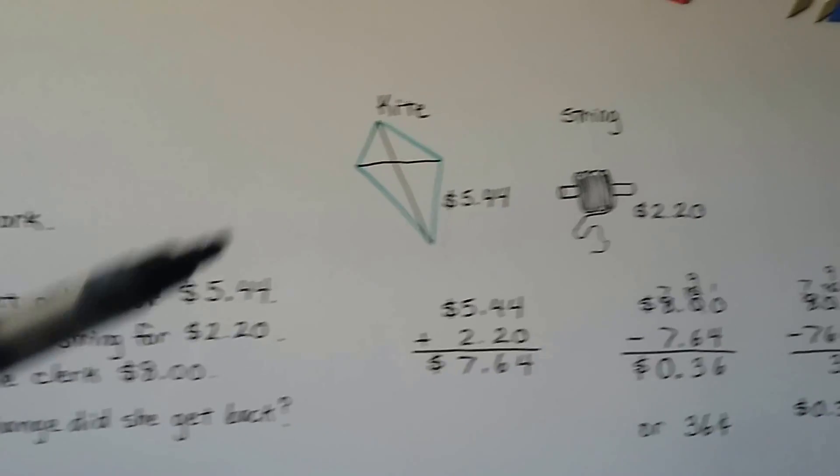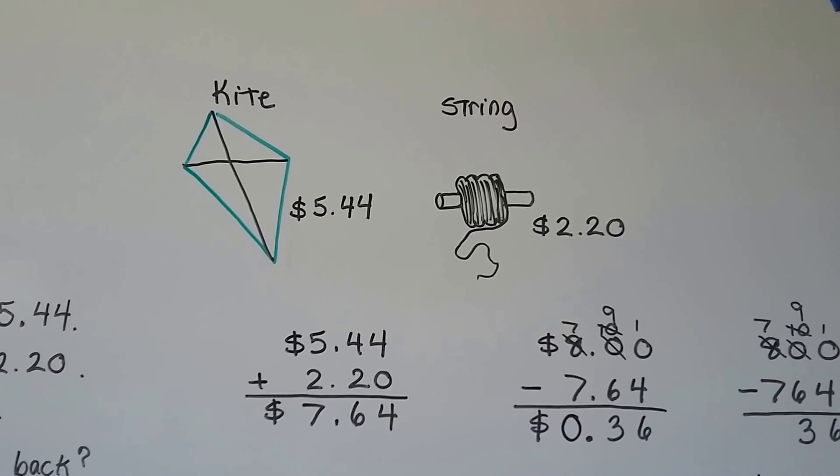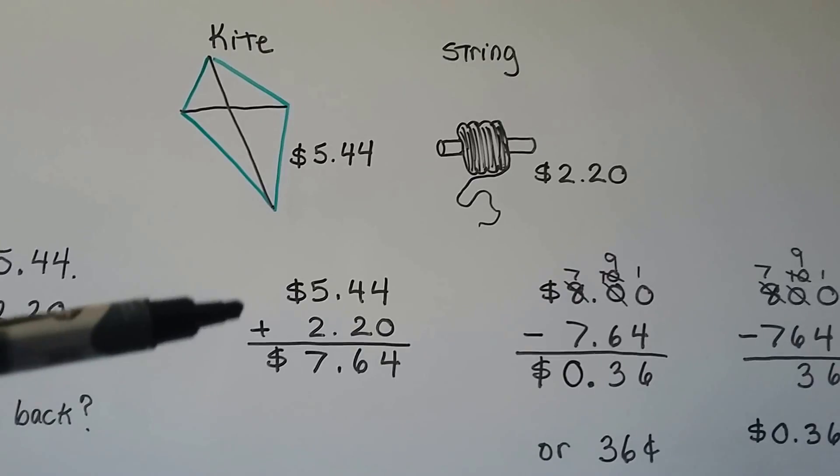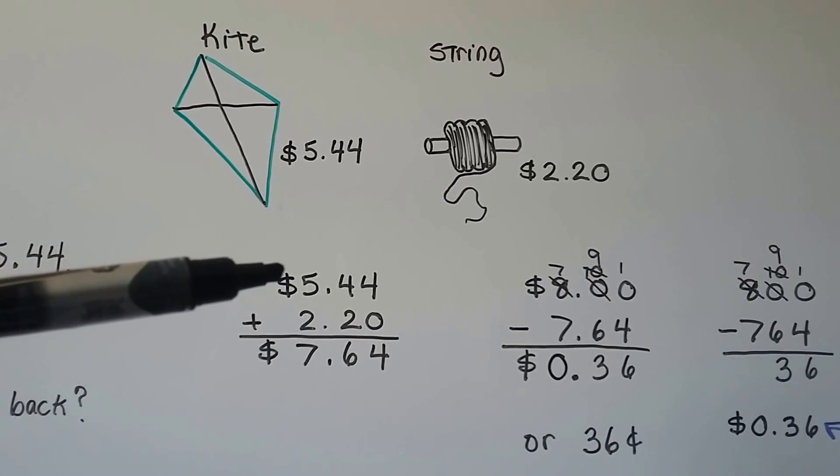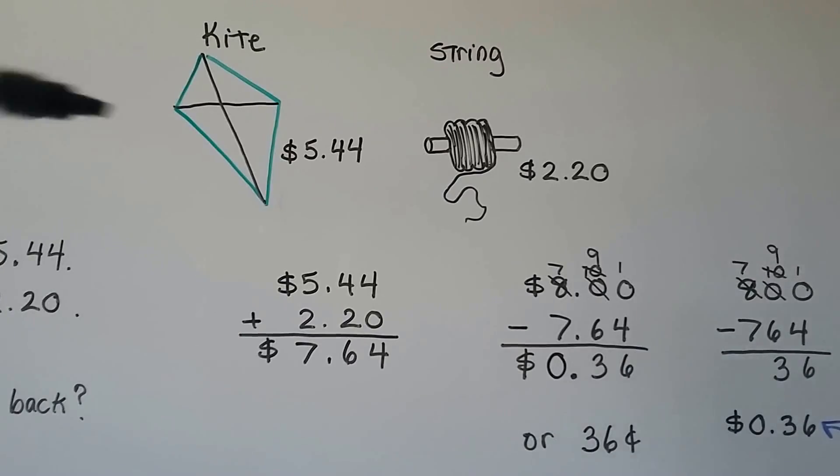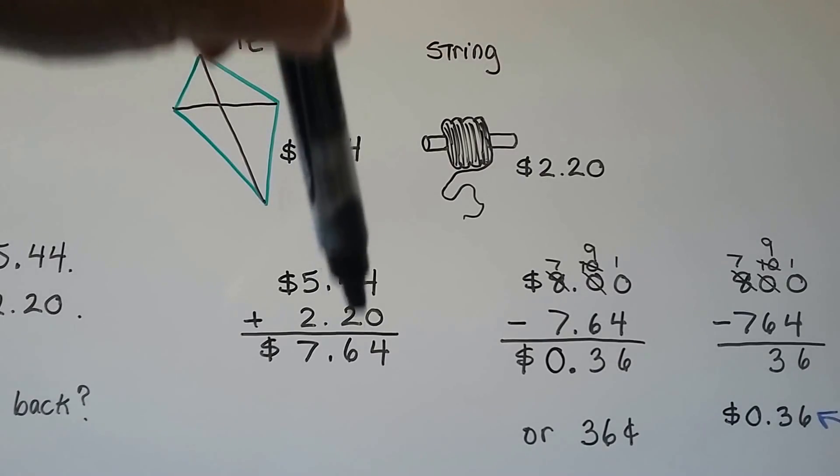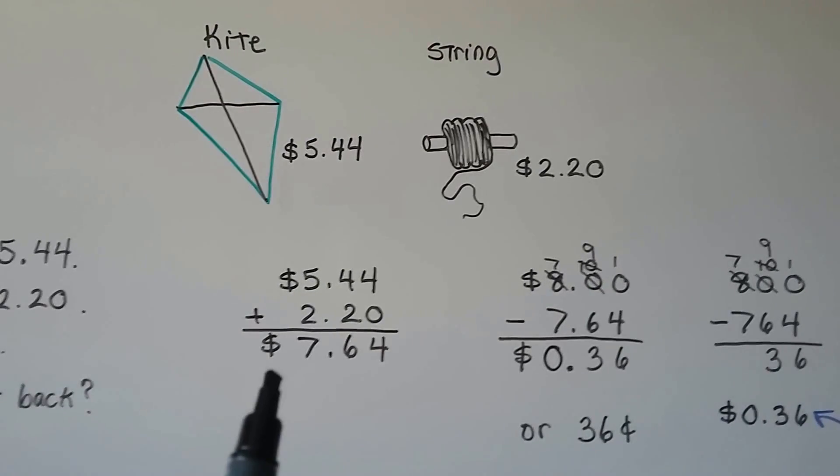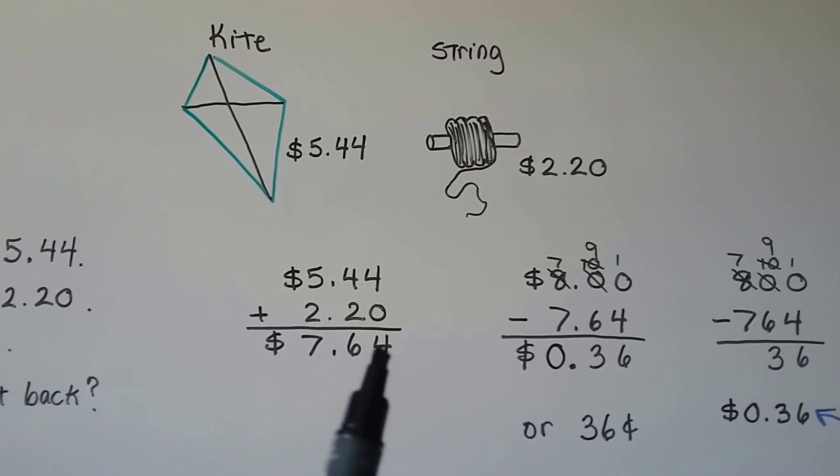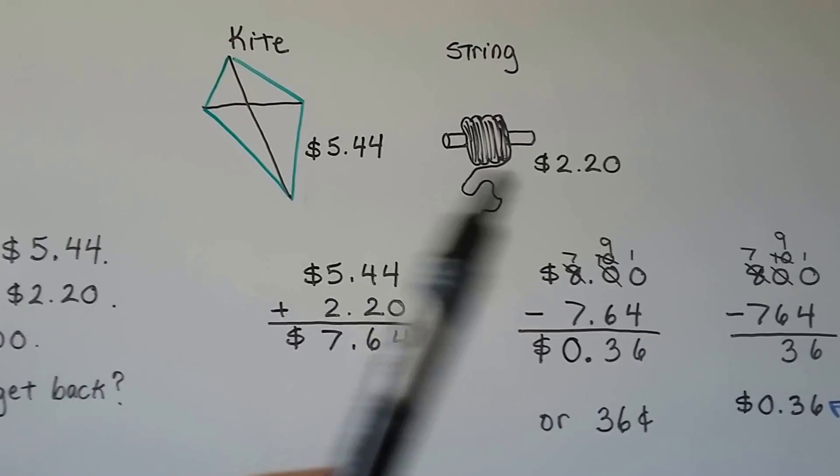So, we've got a kite for $5.44 and string for $2.20. We add stacking the decimal points on top of each other. 4 plus 0 is 4. 4 plus 2 is 6. And 5 plus 2 is 7. We get $7.64. That's how much these two items cost together.